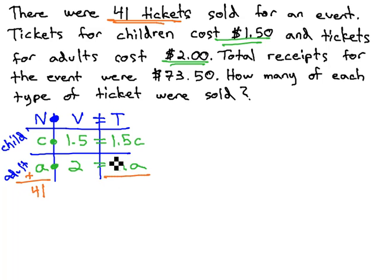As far as income goes, we're going to add the children and the adult tickets, and that gives us the $73.50 in total income that was brought in. Because our value column was in dollars, $1.50 and $2, we will also list this in dollars as well, as 73.5.